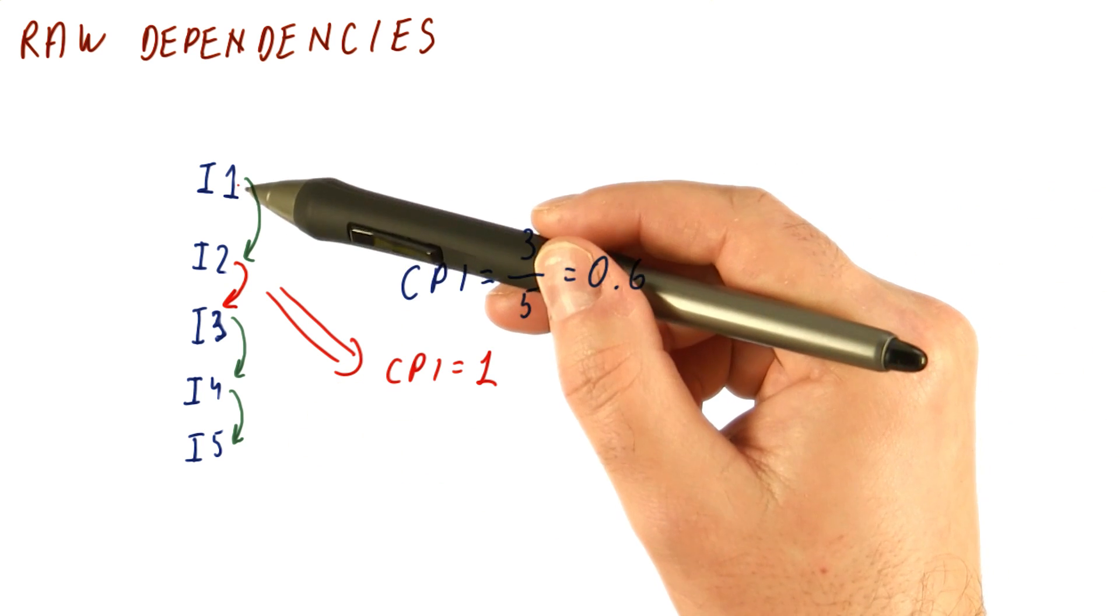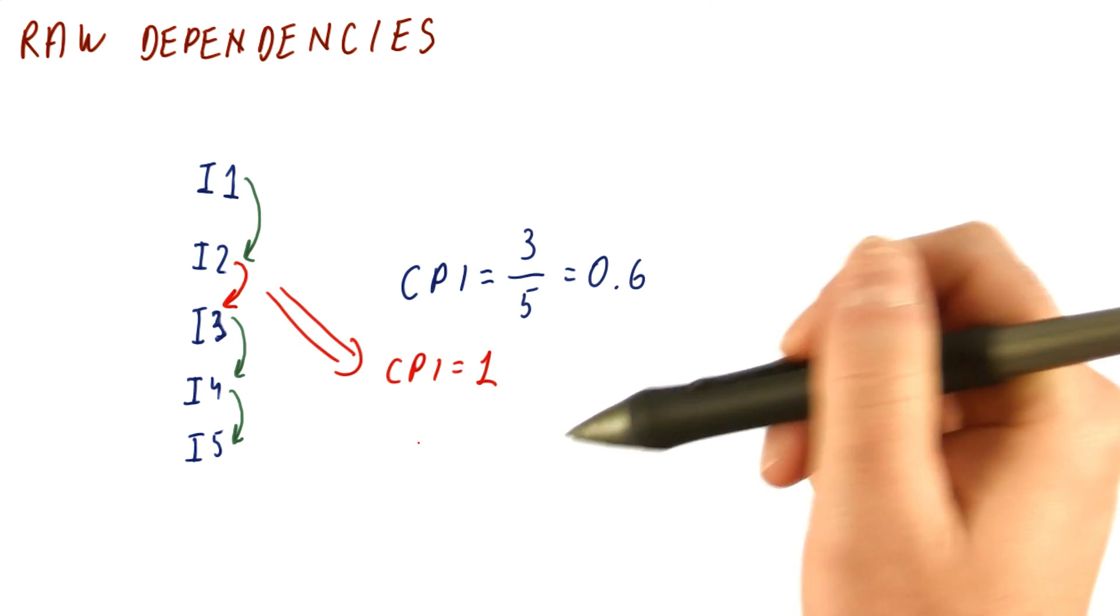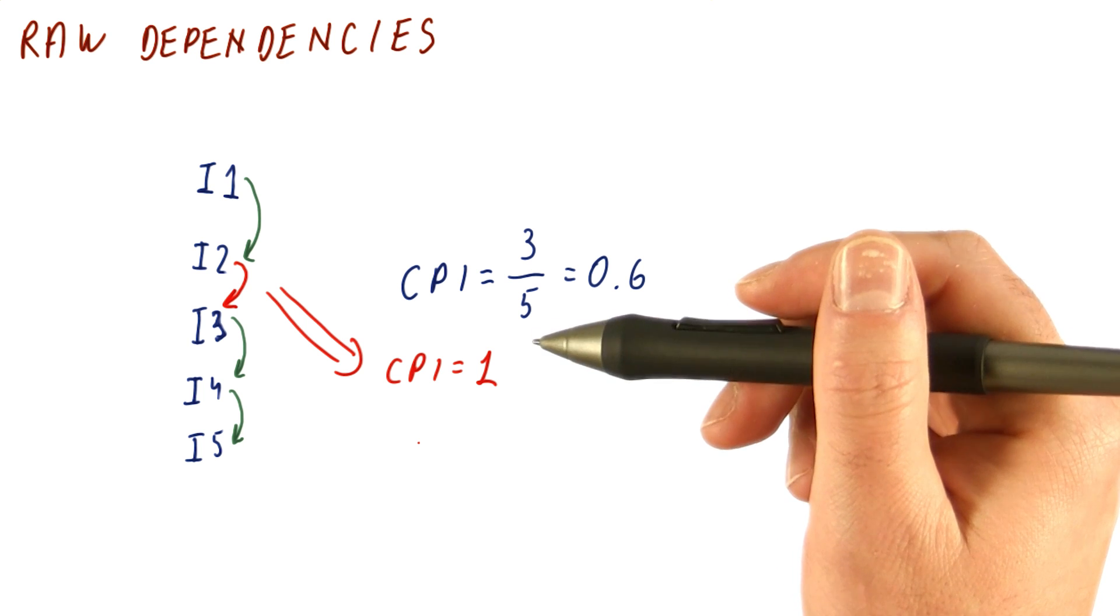So basically, in the program, the dependencies, the raw dependencies are going to determine basically what is the possible CPI, even if the processor can do everything else ideally.